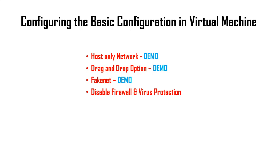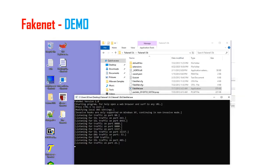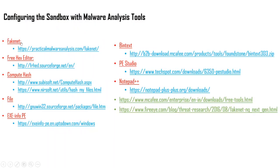In the last sessions we have seen three demos: the host-only network demo, drag-and-drop, and FakeNet installation in the virtual machine. You have to download FakeNet simulation software from the URL practicalmalwareanalysis.com/fakenet. It is available in zip format. You can download it on your host computer and drag and drop it into your virtual machine.